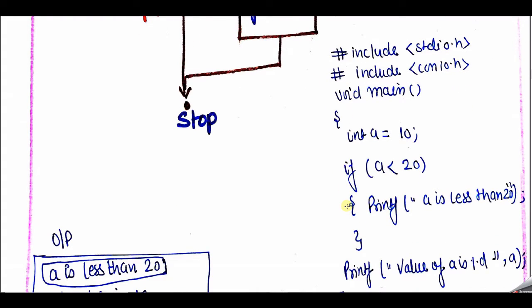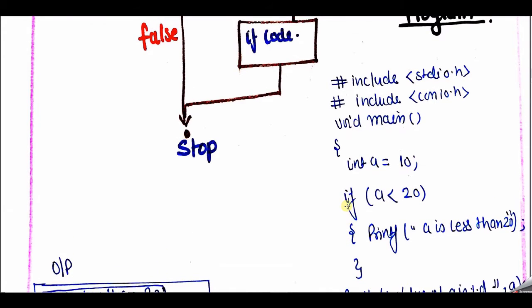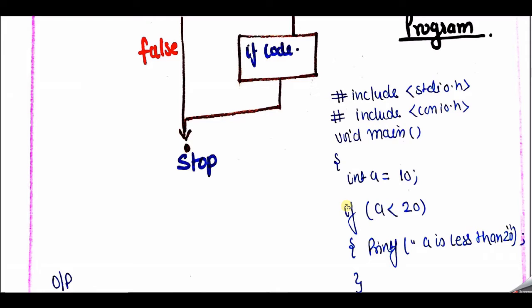Let's see a simple example where the task is: check whether the given number is less than 20 or not. If the given number is less than 20, then show the output 'a is less than 20'. If the number is not less than 20 — meaning the condition is false — we don't need to do anything here, because the task only mentions output when the value of a is less than 20. No instructions are given for when the value is false.